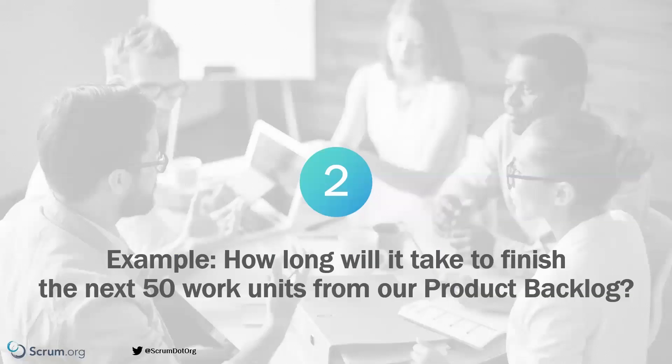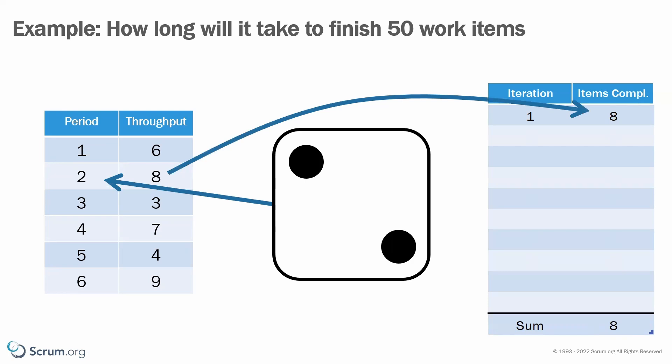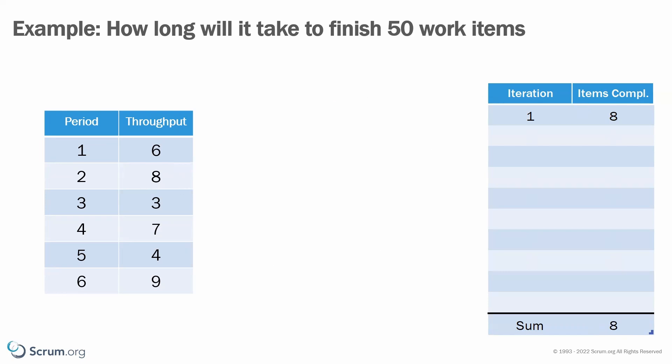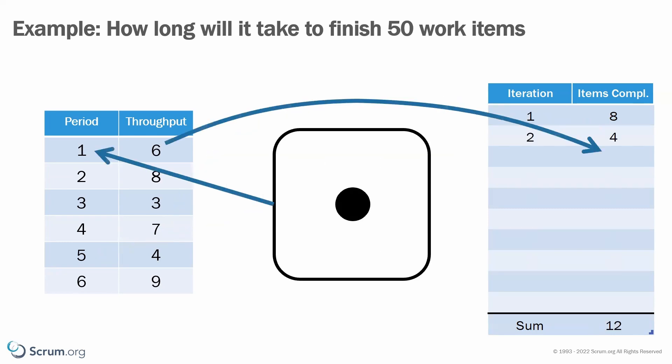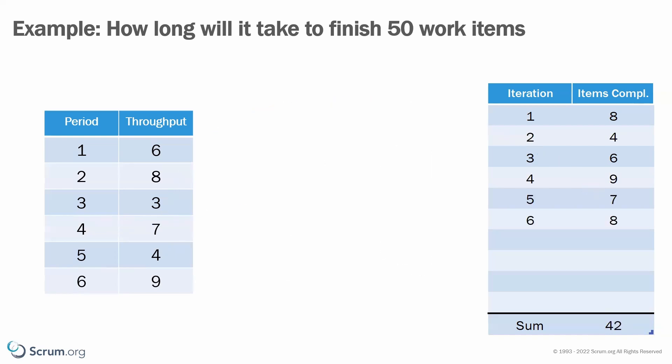We had a look at forecasting how many items we may complete in a certain period of time. Now let's look at how long it will take to complete a number of items. For example, let's say we have a backlog of 50 items to complete and we want to forecast when this is likely to finish. To simplify this, we assume the product backlog is stable — it does not change — and the same with regards to the performance of the team. It is important to note that you would not run the simulations only once; you would run this multiple times as new data constantly emerges, updating the forecast with the most current data.